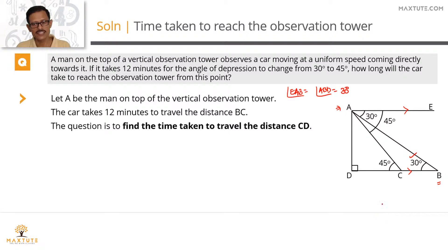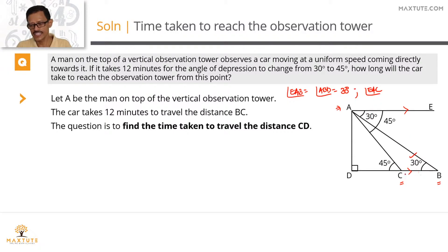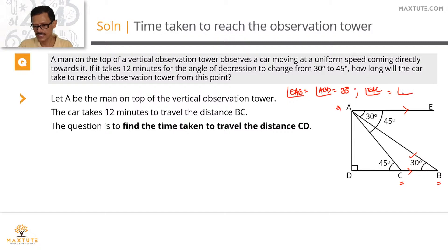After 12 minutes, the car has moved from point B to point C, traveling that distance. The man is now observing the car from point A, and the angle of depression is 45 degrees. By interior alternate angles, angle EAC equals angle ACD, which is equal to 45 degrees.